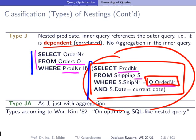So ideally we have to rewrite it to help the database system answer this query efficiently. Additionally, Type JA is like Type J plus aggregation.